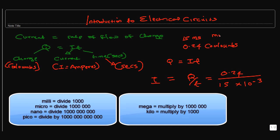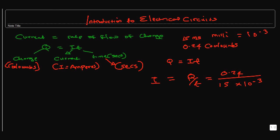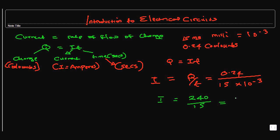We know that milli is equal to 10 to the minus 3, basically 1 over 1000. So we have a current of 2.40 divided by 15 over 10 to the minus 3, which gives us 16 amps.